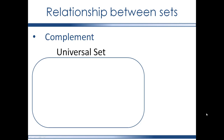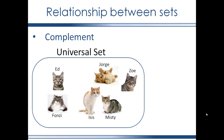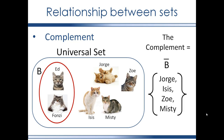Complements. The complement of a set brings up the concept of a universal set again. So in this case, the universal set is all the cats in the Gilbert household. If set B consists of Ed and Fonzie, then the complement of B is a set containing Jorge, Isis, Zoe, and Misty — that is, all the elements of the universal set that are not elements of set B. So a complement of any set is a set containing all the elements of a given universal set except for the elements of the set you want the complement of. The notation for a complement is a bar placed over the set name.